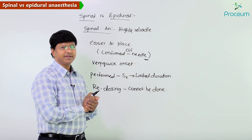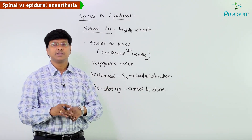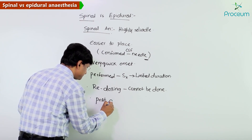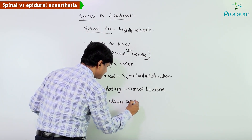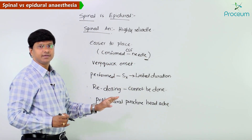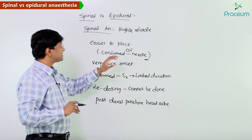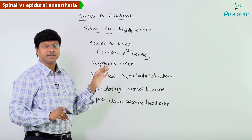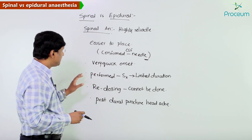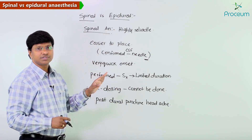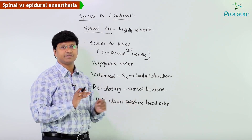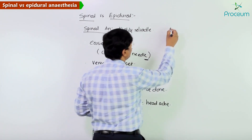Another very common problem with spinal anesthesia is post-dural puncture headache. So to summarize: the advantages are it is highly reliable, easy to place the needle, confirmed by CSF and loss of resistance, and quick onset of action. The disadvantages are it is only useful for surgeries of limited duration, redosing cannot be done, and post-dural puncture headache is a very common problem.